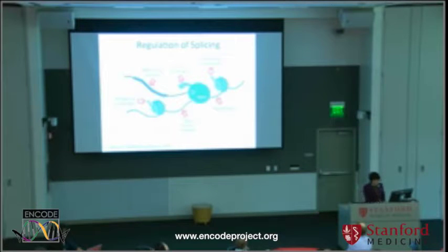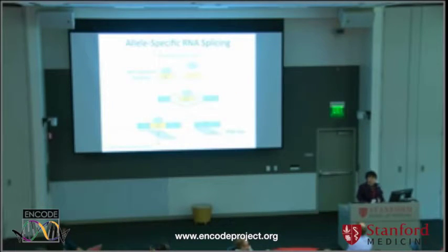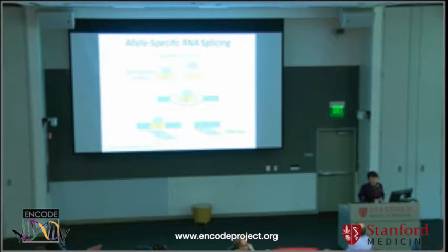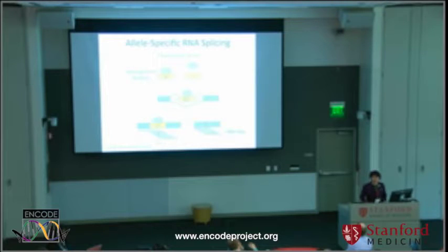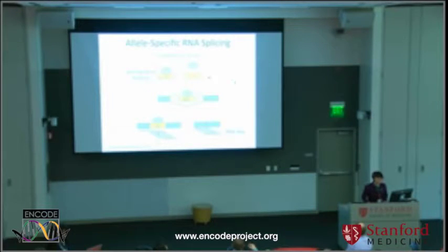Regardless of the mechanism, what we are interested in is identification first — to identify what splicing events may be influenced by genetic variation, and then after that we can deal with the question of mechanism. In our lab, we first took an allele-specific approach, because in ENCODE and other big projects we have accumulated a large amount of RNA-seq data.